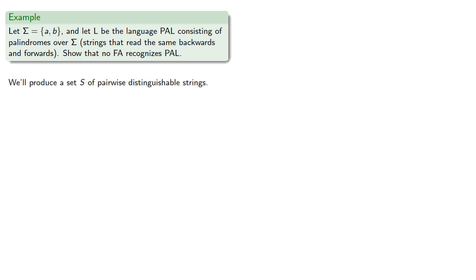So first note that A and B are distinguishable over our language, since we can concatenate either with A, and AA is a palindrome, while BA is not.